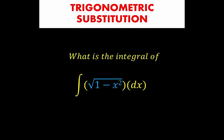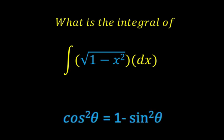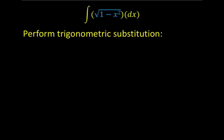This is a problem sent by one of our followers. Notice that under the radical symbol is the expression 1 minus x squared. For families of functions that look like this, the best integration technique is to use trigonometric substitution. Recall that in our trigonometric identities, cosine squared theta equals 1 minus sine squared theta, which fits perfectly to the form of 1 minus x squared. So we are going to perform these substitutions.